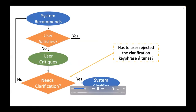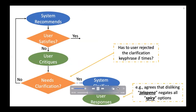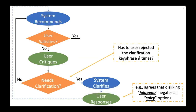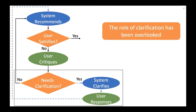Upon receiving the user's responses — for example, the user accepts a clarifying keyphrase for disliking spicy instead of the original critique for disliking jalapeno — the system then provides refined recommendations. This preference clarification component is important work done in our paper that has been overlooked in the research field.